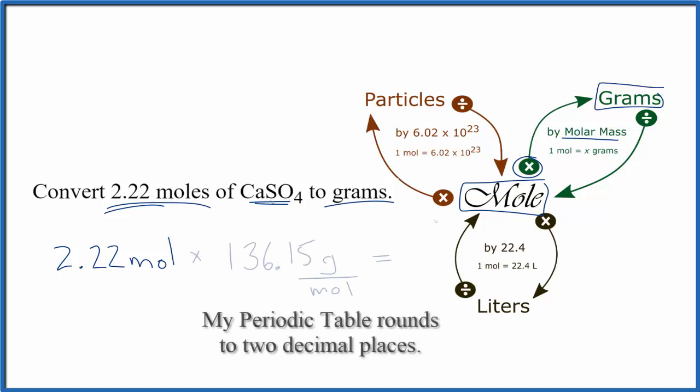That gives us this. So we have the molar mass for CaSO4 here, 136.15 grams per mole.